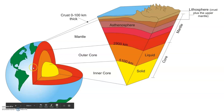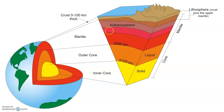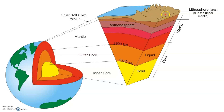I'm sure you're all familiar with the fact that we have a core, a mantle, and a crust, but lesser known terms are the asthenosphere and the lithosphere. The lithosphere is basically the crust with a tiny part of the mantle, and the asthenosphere is the very upper part of the mantle.